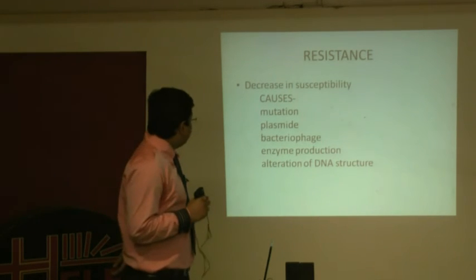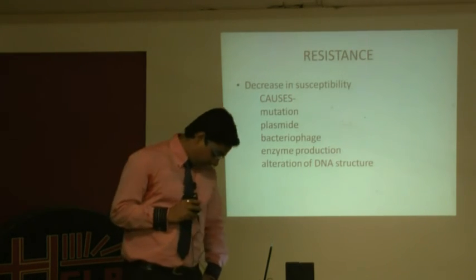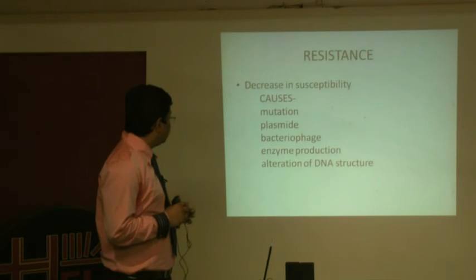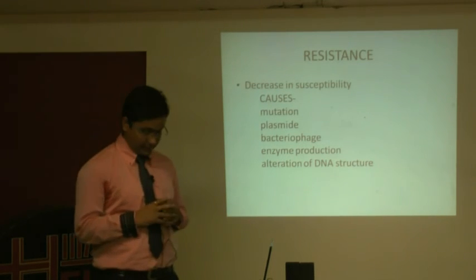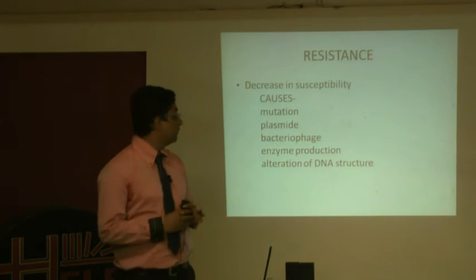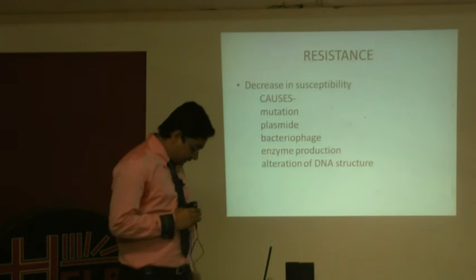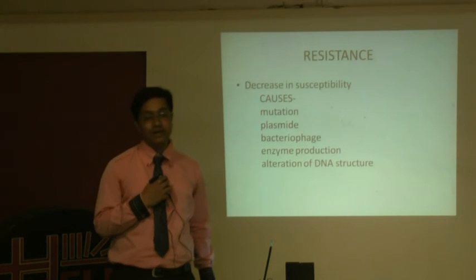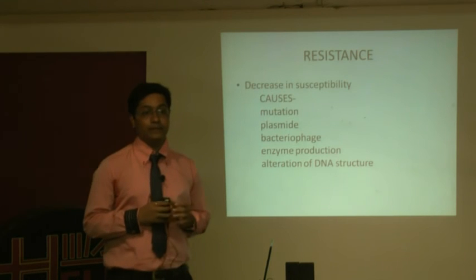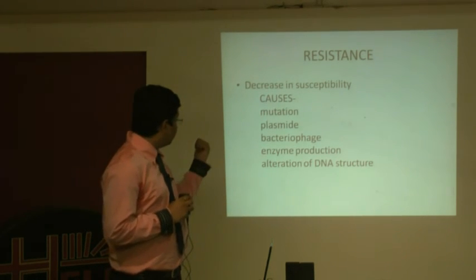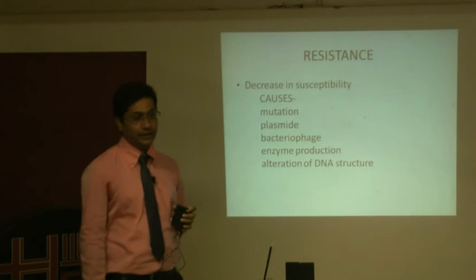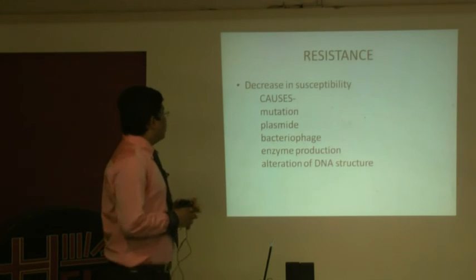Another cause of resistance is plasmids — circular DNA structures in bacteria. If one bacterium is resistant to a particular drug, it can transfer that resistance to other bacteria via plasmids. There is also something called bacteriophages — viruses that infect bacteria — which can transfer genetic material from one bacterium to another, thereby spreading resistance.